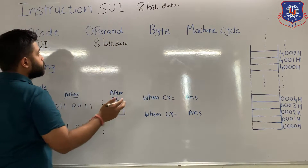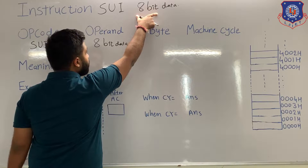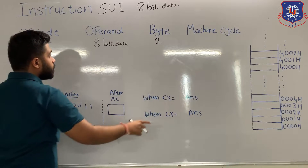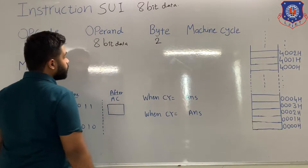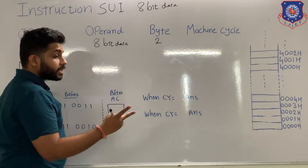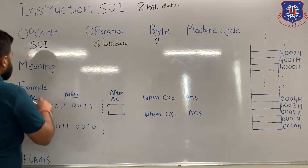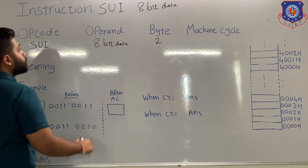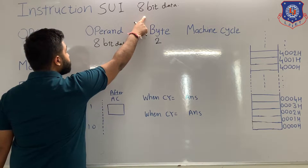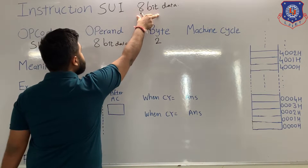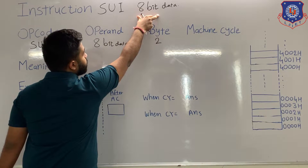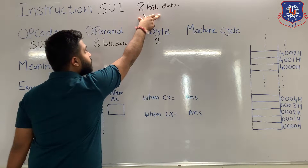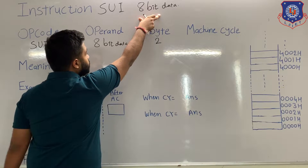If in the instruction you can see an 8-bit value, it means that the instruction is of 2 bytes. 2 bytes means when this instruction is stored in the memory, it will occupy two consecutive memory locations. The meaning of SUI 8-bit data is: subtract immediate 8-bit data from the accumulator, and the answer will be stored in the accumulator.